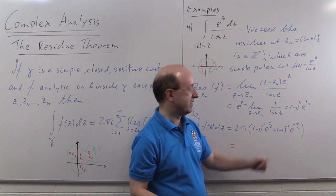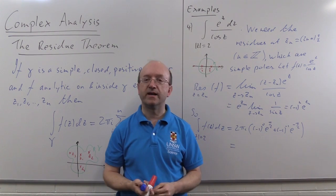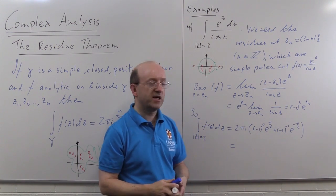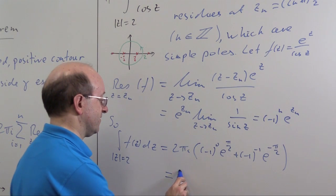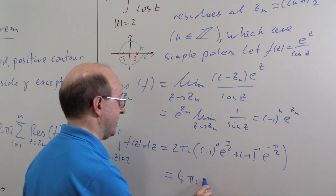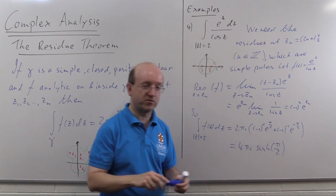and we can simplify that, (-1)^0 is 1 of course, (-1)^(-1) is -1, that's e^(π/2) - e^(-π/2), well that's twice the hyperbolic sine of π/2, so our final result is that this is 4πi sinh(π/2).